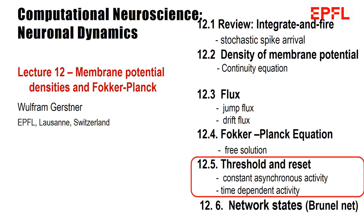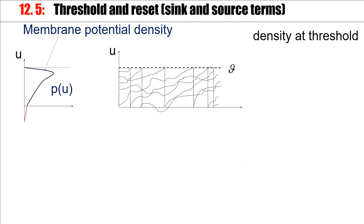Welcome to the lecture series on neuronal dynamics. In this video we look at the Fokker-Planck equation in the presence of a threshold. Here is an example of a membrane potential trajectory which goes up, at some point it hits the threshold, there is firing, there is reset, and then the whole process starts again.